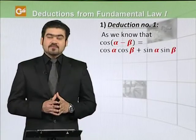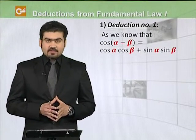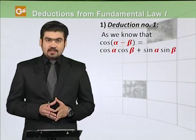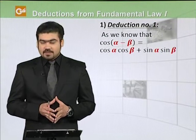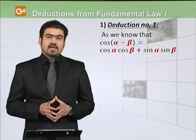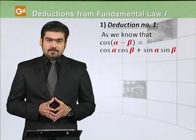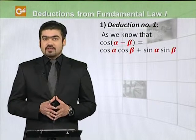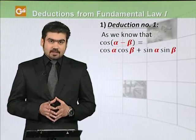Humare paas fundamental law of trigonometry hai, that is cos(α - β) = cos α cos β + sin α sin β. Humne isse kuch naye results deduce karne hai.